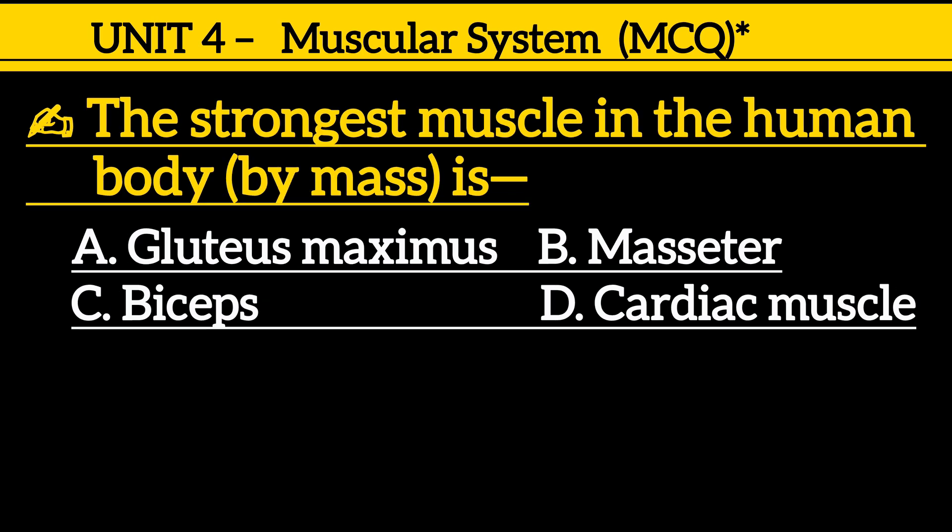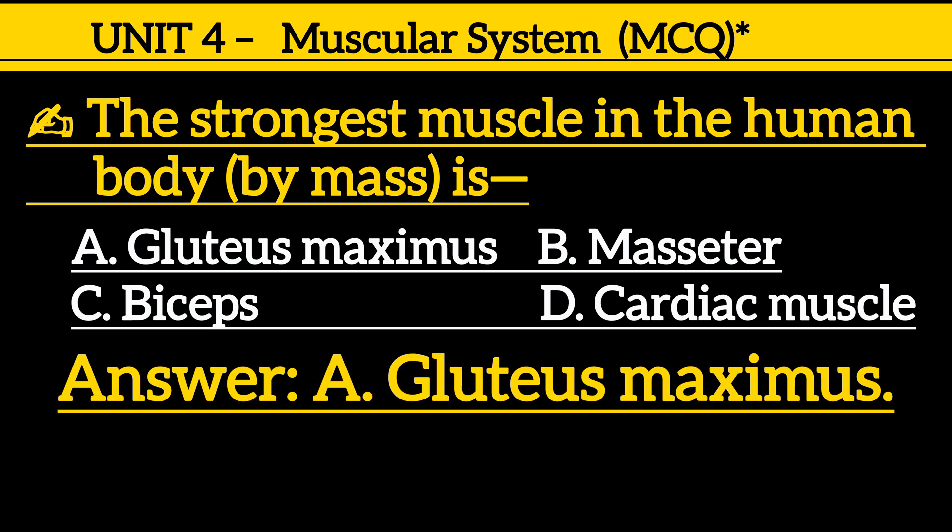Next one is: the strongest muscle in the human body by mass is — option A: gluteus maximus, option B: biceps, option C: masseter, option D: cardiac muscle. Correct answer is option A, gluteus maximus.